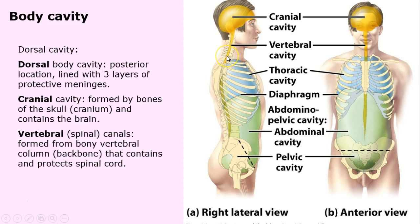The dorsal cavity has cerebral spinal fluid inside and a bony vertebral column. The cranial is formed by bones of the skull, and the dorsal has three layers of protective meninges. Maybe you've heard of someone having meningitis — inflammation of the meninges. Our body in its great wisdom has protected this sensitive region with multiple layers of this durable substance called meninges.